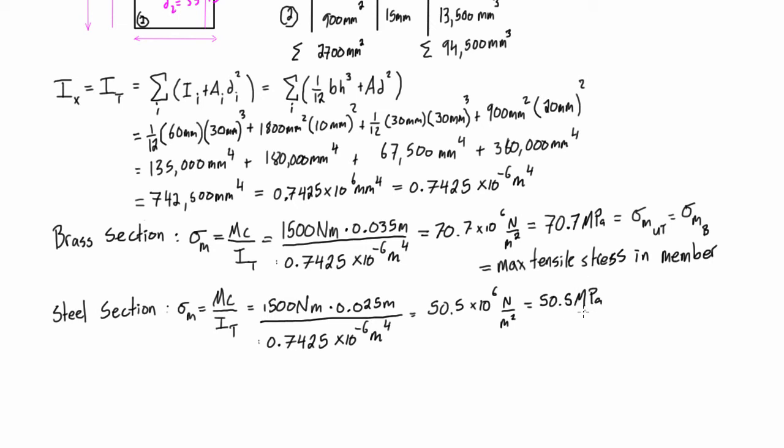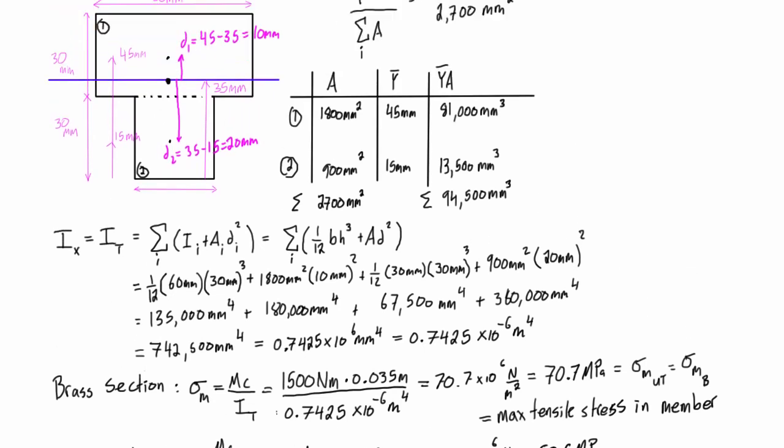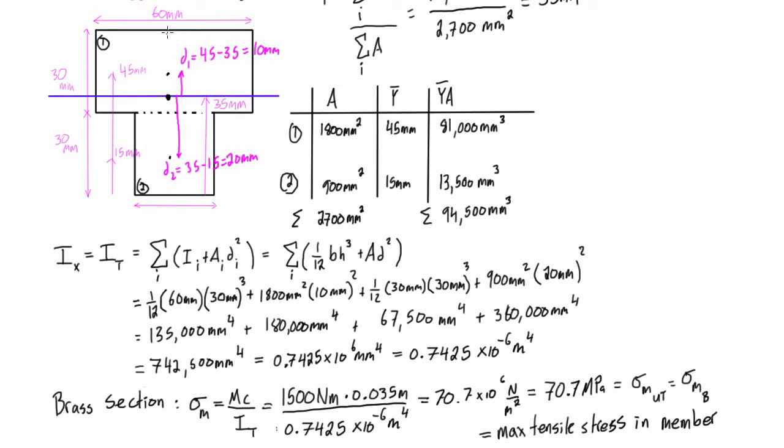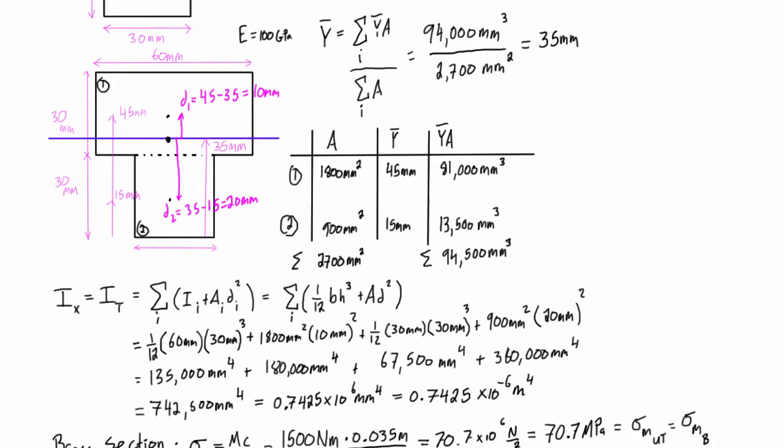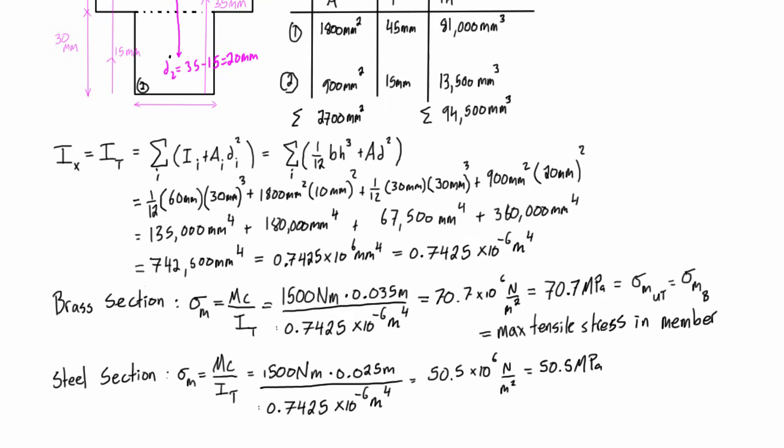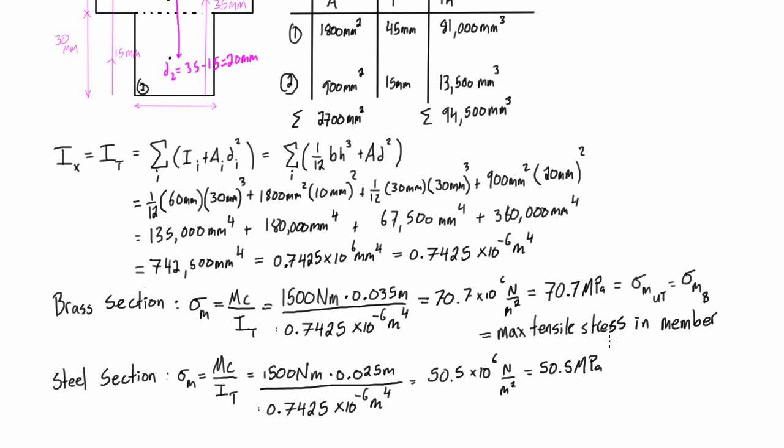Now, this 50.5 megapascals is the stress that we just calculated in the extreme fibers of the transformed area or region. But what we did here in this calculation is we inflated this area by a factor of n. In this case, n was 2, and so this value here for the transformed section is actually reduced by that factor.